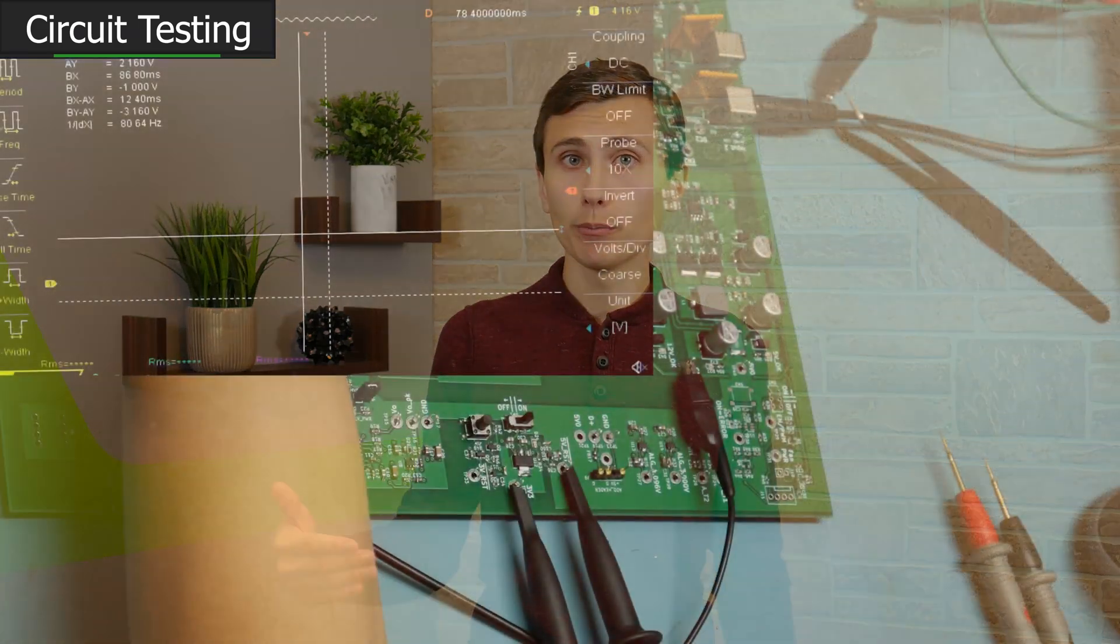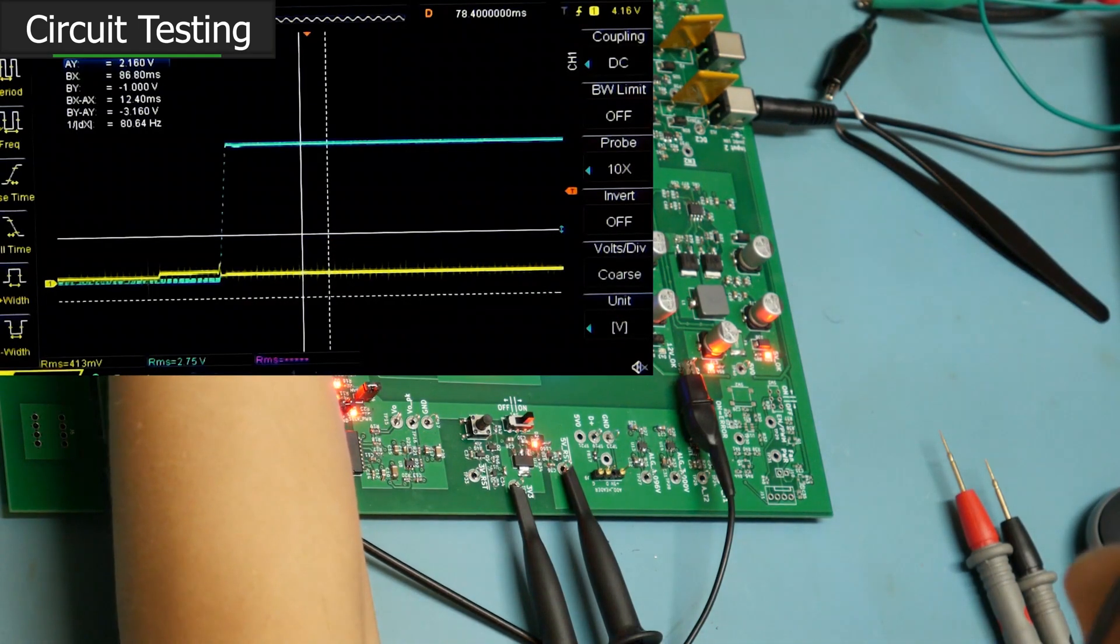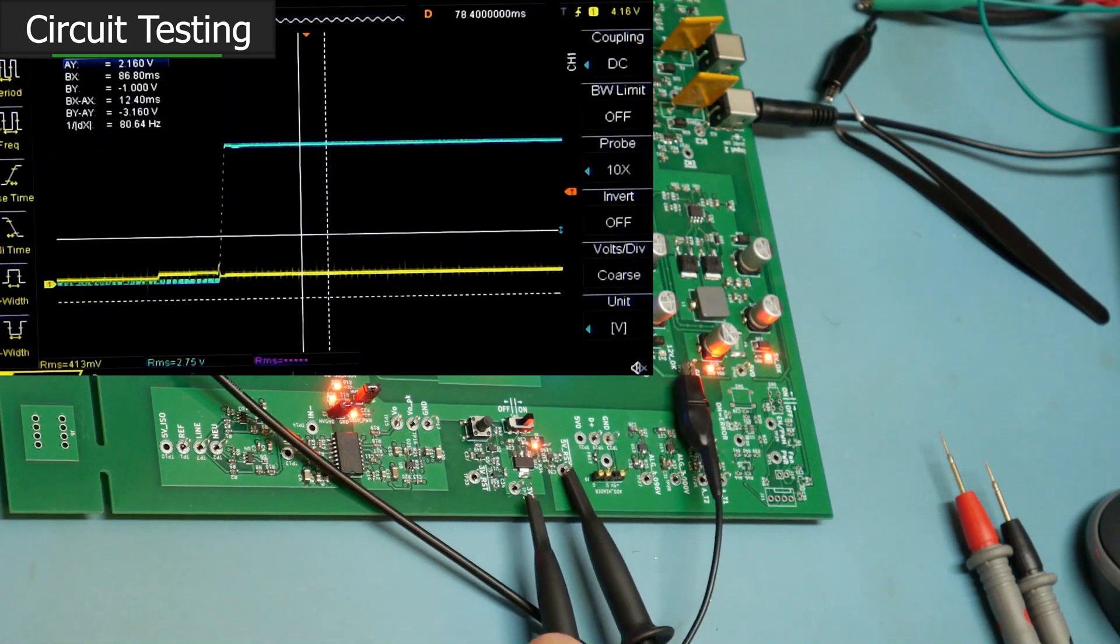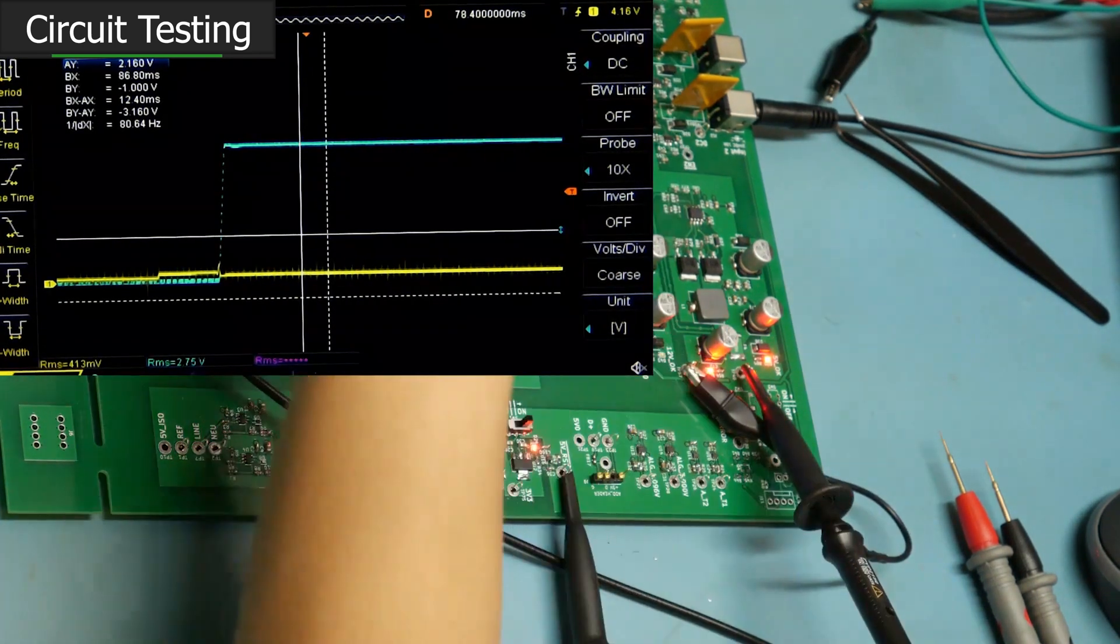Moving on then. The POR generator was the next circuit that we dug into. And the POR generator was working okay. Well, at least the 5 volt power on reset generator was working great. We saw a reset pulse that was a couple milliseconds long. Deasserted when power was good. Perfect.